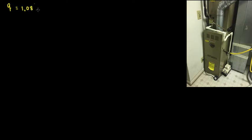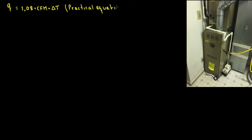So let's start writing the equation. The sensible heat equation is Q = 1.08 times CFM times delta T. This is a very practical equation — what we use in the field. Sometimes other books or references say 1.1 times CFM times delta T.